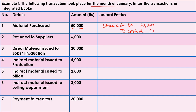Our next transaction is return to supplier. When material is returned from the store to the supplier due to damaged condition or not being up to the mark, material goes out of the store. So we credit Store Ledger Control Account. Entry: Cash Account Dr. to Store Ledger Control Account — Rs.6,000.